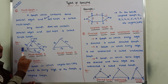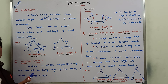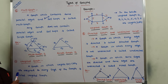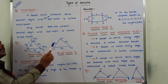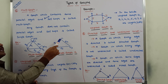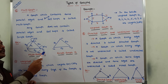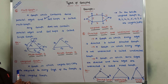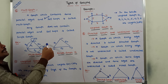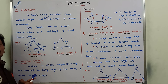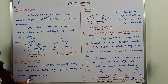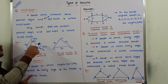A graph is said to be a simple graph when it does not contain self-loops and does not contain parallel edges. Consider this graph — it contains three vertices V1, V2, V3 and three edges E1, E2, E3. There is no self-loop at any vertex, and there are no parallel edges. Hence, this graph is a simple graph. Any graph which contains some parallel edges and some self-loops is called as multi-graph.